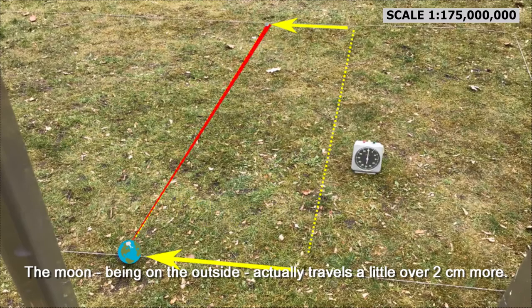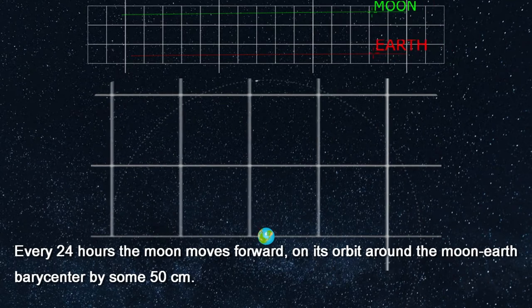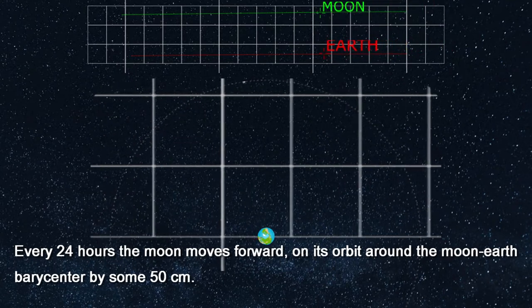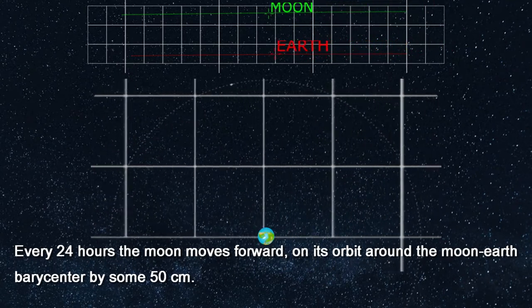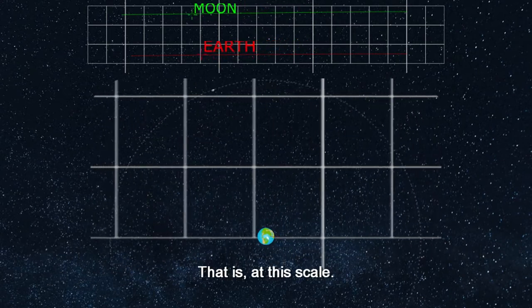The Moon, being on the outside, actually travels a little over 2 centimeters more. Every 24 hours the Moon moves forward on its orbit around the Earth by some 50 centimeters. That is, at this scale.